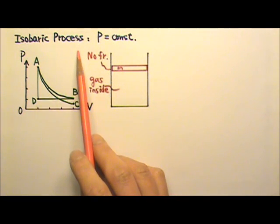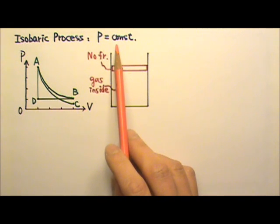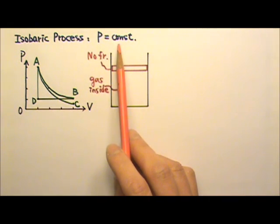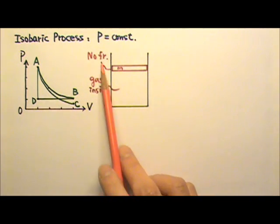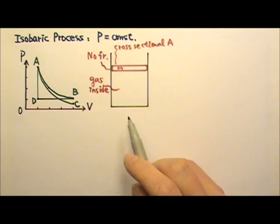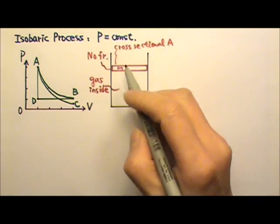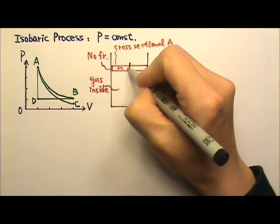An isobaric process by definition means the pressure stays constant in the process. For example, I have a gas-filled cylinder with a frictionless piston.